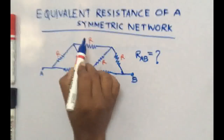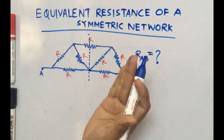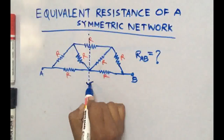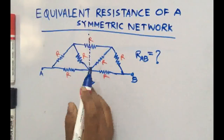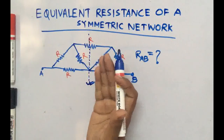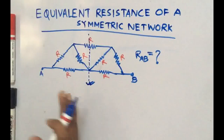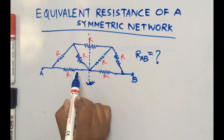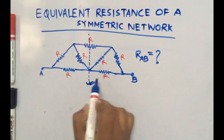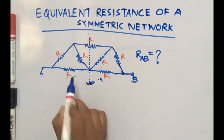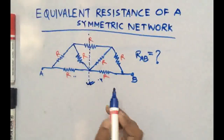If I divide this circuit through a vertical line, you can see each side is symmetric about this vertical axis. If you fold this network about this line — taking the right side and folding it over to the left side — this side will overlap with that side. So you can say this circuit is symmetric about this line, or this side is the mirror image of the other side.